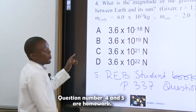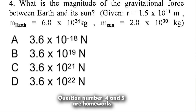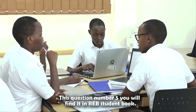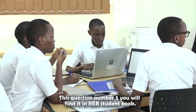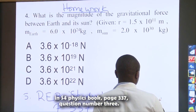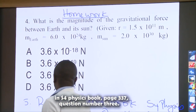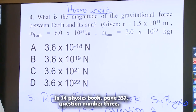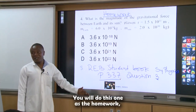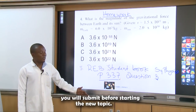Question number four and question number five are homework. Question number five you will find in the senior four physics lab student's book, page 306-307, question number three. You will do this as homework and submit it before starting the next topic.